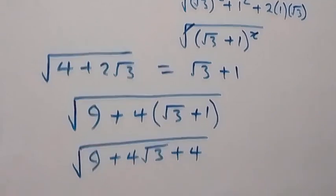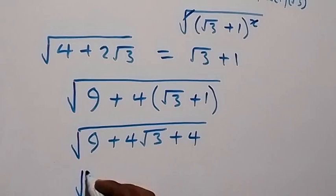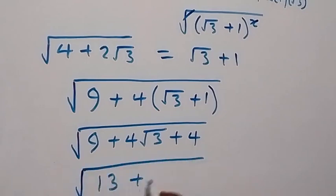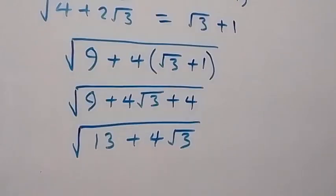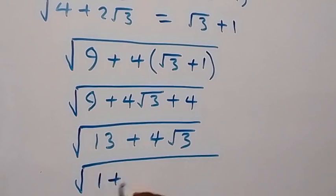Combining the constant terms, 9 + 4 equals 13, so we have square root of 13 + 4√3.